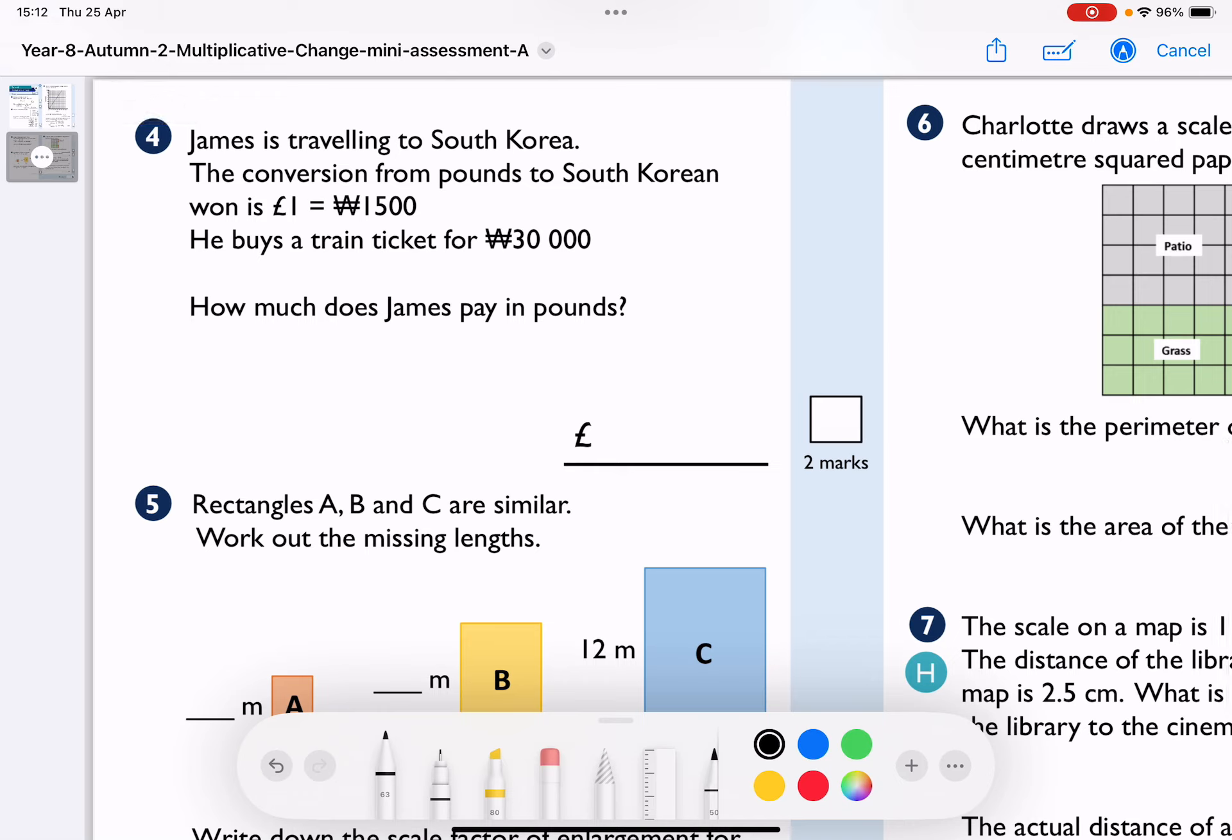James is travelling to South Korea. The conversion from pounds to South Korean won is £1 equals ₩1,500. He buys a train ticket for ₩30,000. How much does James pay in pounds?